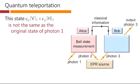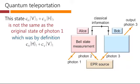Now, this state is not the same as the original state of photon 1. That, by definition, was this state with a horizontal polarization associated with this coefficient and a vertical polarization associated with that one.